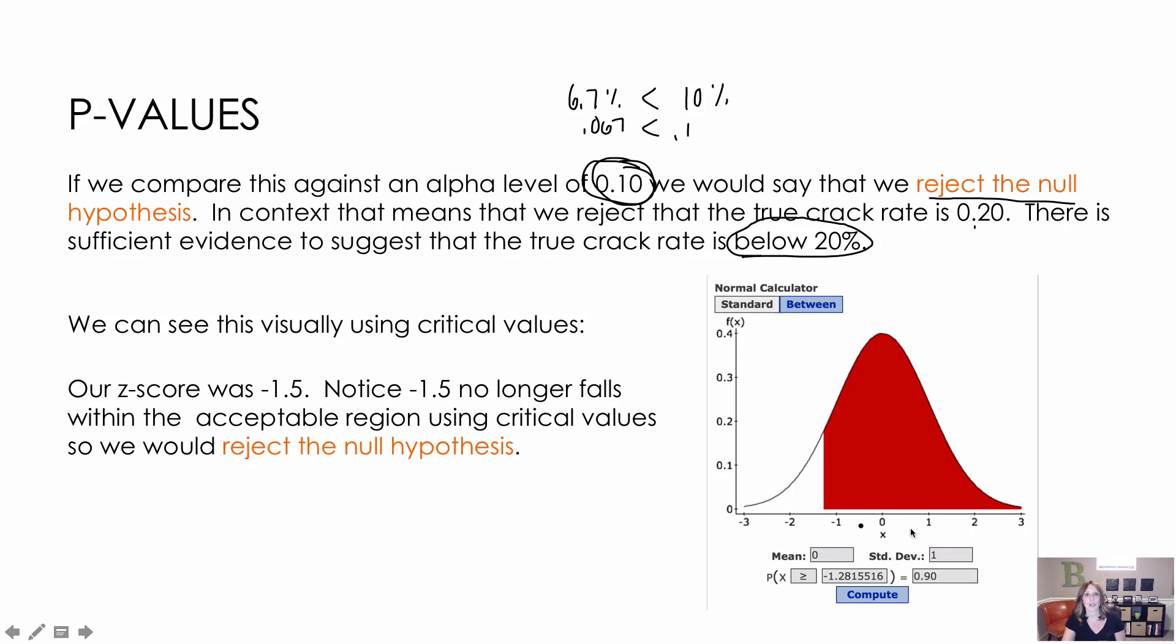Now, again, if I were using critical values, which some people have you do instead of using a p-value, then our z-score was negative 1.5, which again is right here. Notice on my new picture, using that 90% to the right, my new picture, negative 1.5 is no longer in the okay region. Now I'm saying this is not okay. And I'm going to reject the null. So this is sort of the expected region. And this is the not expected.